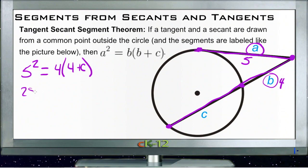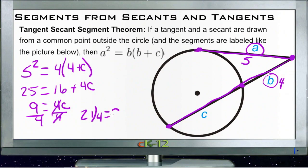Well, that gives us 25 would be equal to 4 times 4, that's 16, plus 4 times C, that's 4C. Then we subtract 16 from both sides, and we get 9 equals 4C, and then divide both sides by 4, and we get 9 fourths, or 2 and a quarter is equal to C.